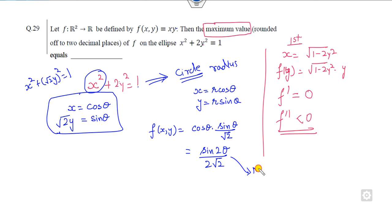Now what is the maximum value of this? We all know the maximum value of this is 1 over 2 root 2. That is the right answer of this problem. You can write them into two decimal places - you will get the right answer.